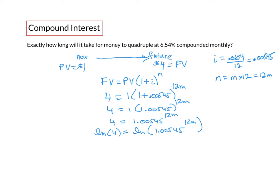There is a general rule that says if you have ln of y to the x that is equivalent to x times the ln of y. Using that rule we could write the right side as this: 12m times the natural logarithm of 1.00545. Our left side stays the same.